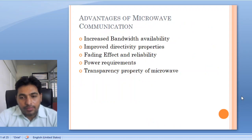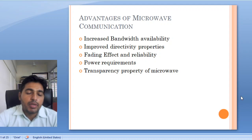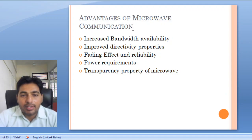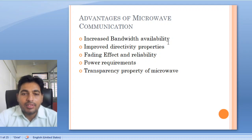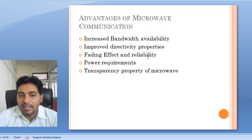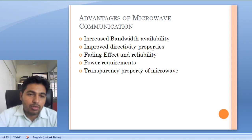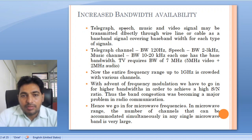Now we will see the advantages and disadvantages of microwave. We have seen that microwave is the region from 1 GHz to 300 GHz. The advantages include: increased bandwidth availability, increased directivity, fading effect and reliability, low power requirement, and the transparency property of microwave.